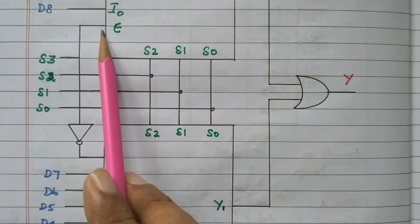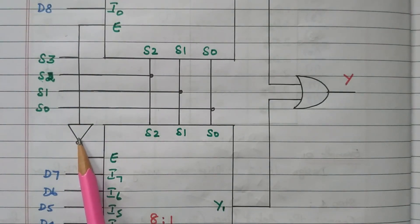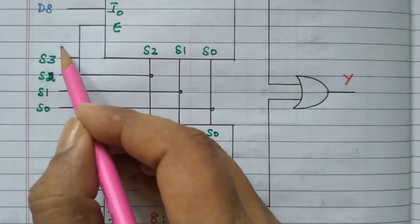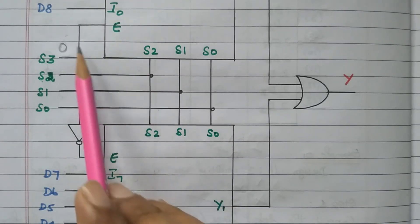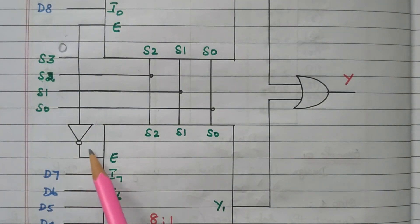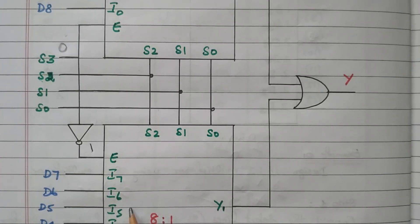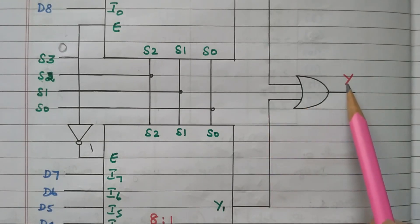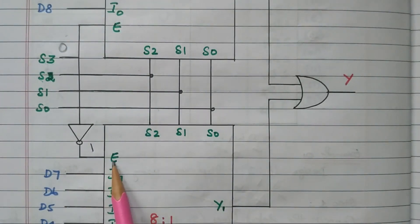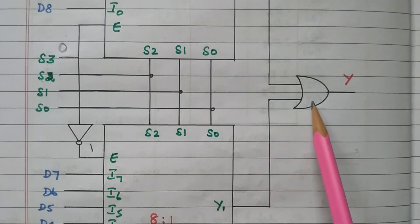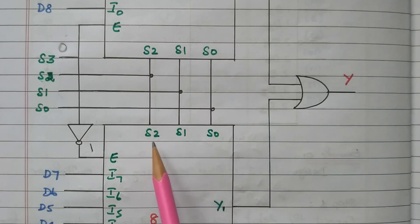S3 is directly connected to the enable of MUX2 and through a NOT gate to the enable of MUX1. If S3 is 0, the 0 is applied to MUX2's enable so MUX2 is not enabled. The same 0 passes through the NOT gate and becomes 1, so MUX1 is enabled. MUX1 transfers any one of the 8 data inputs from D0 to D7 to the final output, depending on the values of S0, S1, and S2.